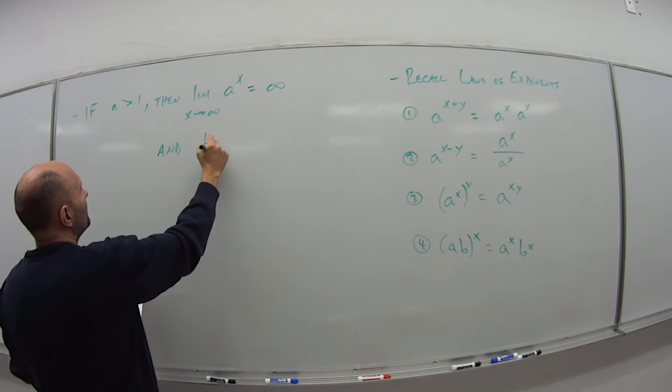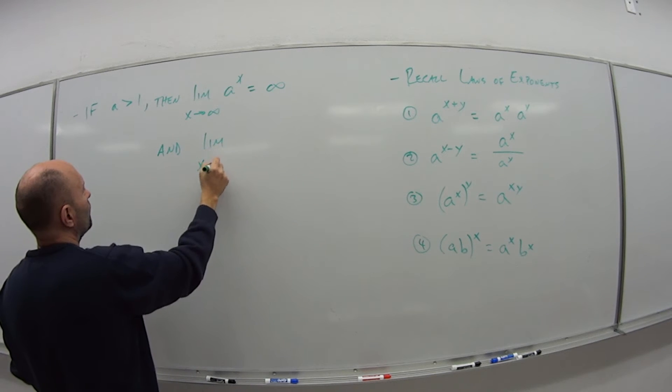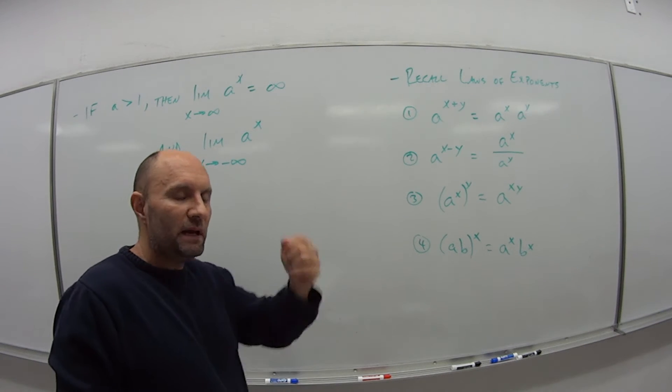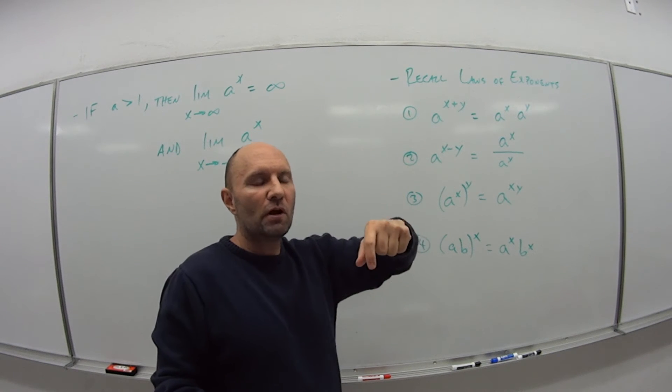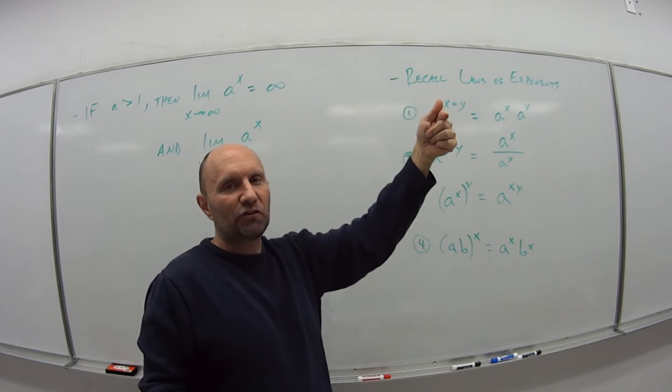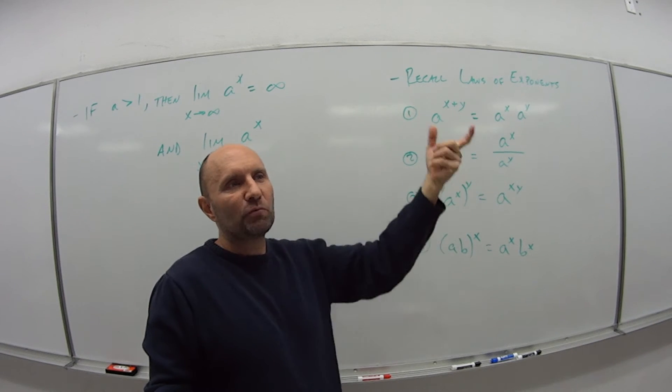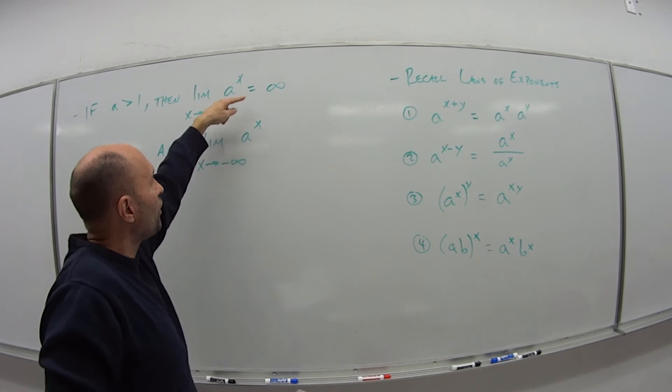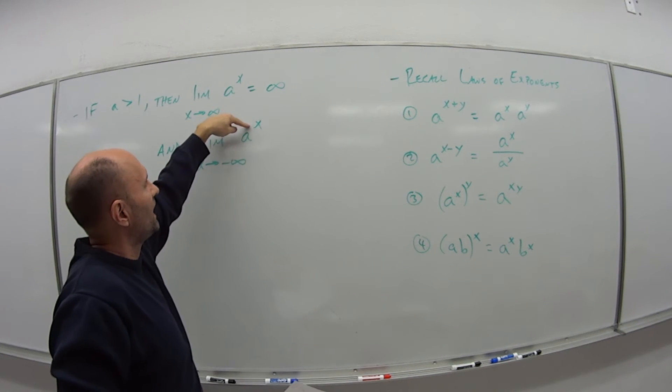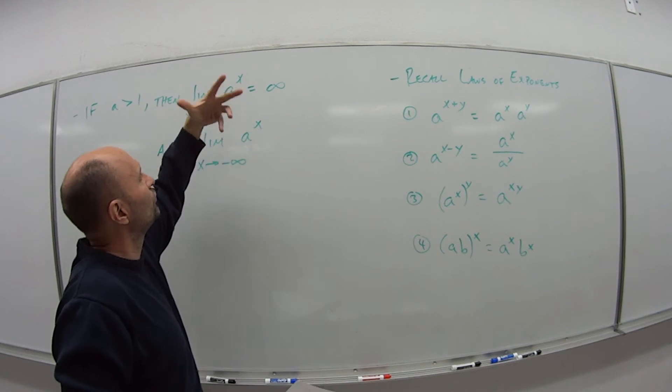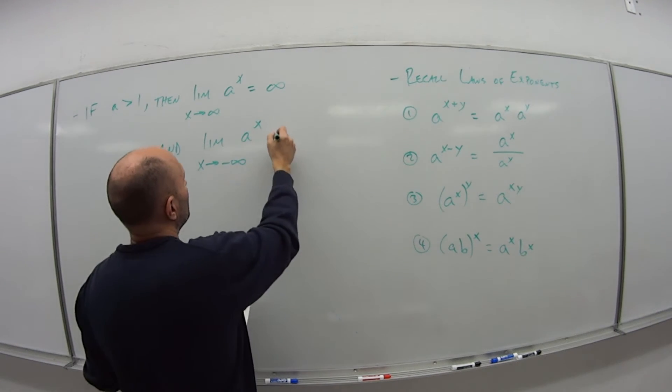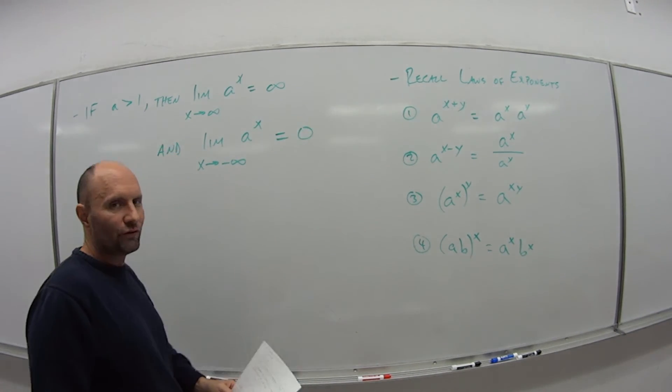And the limit as x goes to negative infinity of a to the x. So that would mean what? That means that I have some number to a negative exponent. And what happens when I have a negative exponent? It becomes a reciprocal, right? So I really have this is like 1 over a to the x power as x goes to infinity. So as the bottom gets really, really, really big, what happens? This whole thing goes to 0.